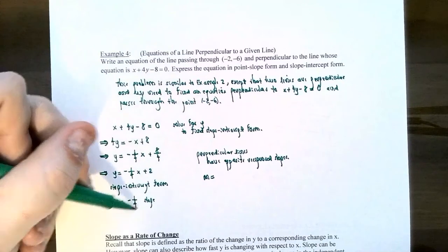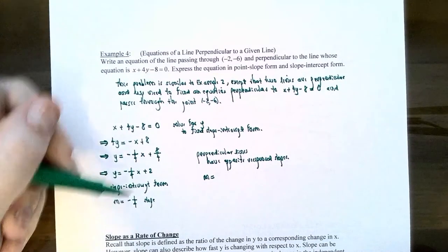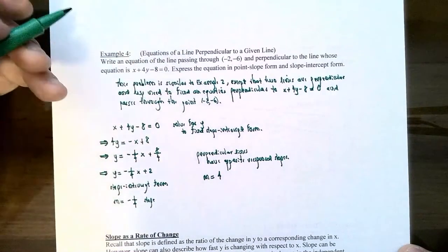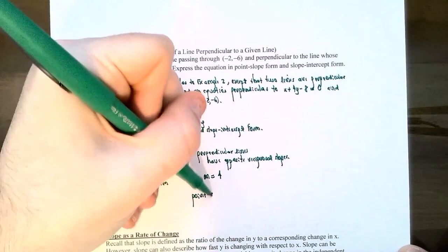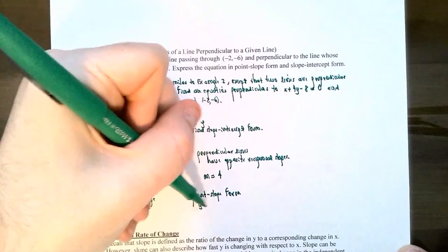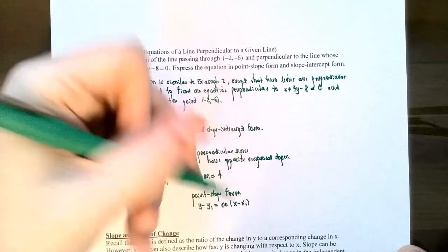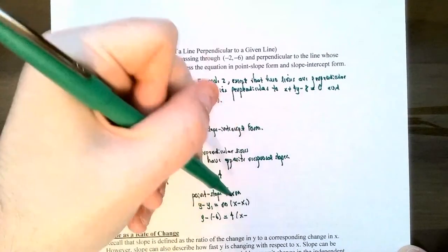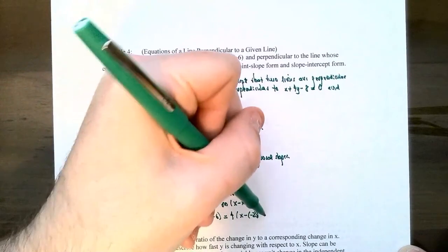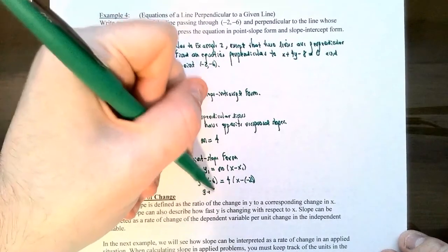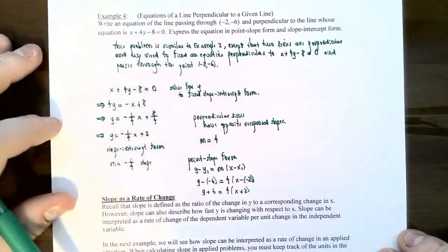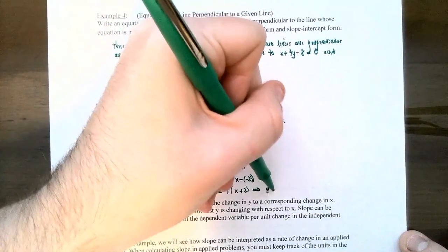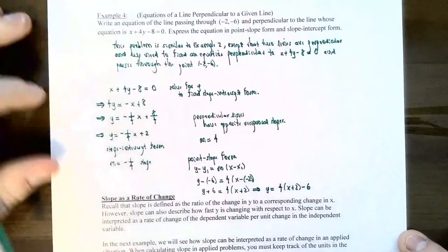Using point-slope form with slope 4 and point negative two, negative six: y minus negative six equals 4 times x minus negative two. Simplifying signs: y plus six equals 4 times x plus two. Subtracting six from both sides: y equals 4 times x plus two, minus six. This is point-slope form.